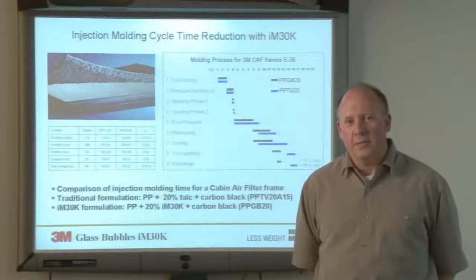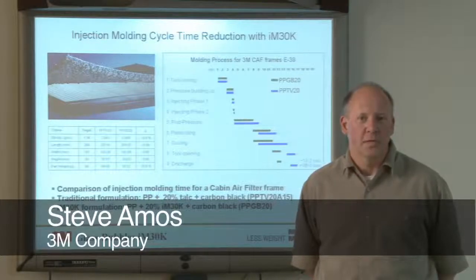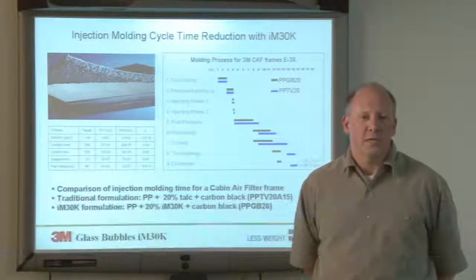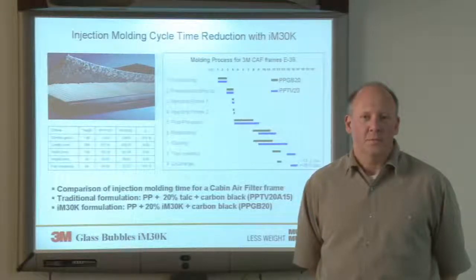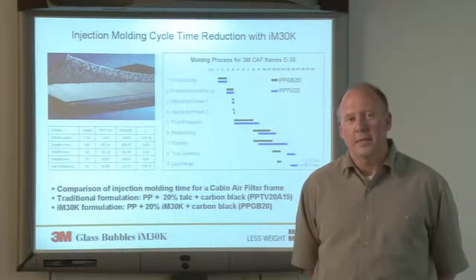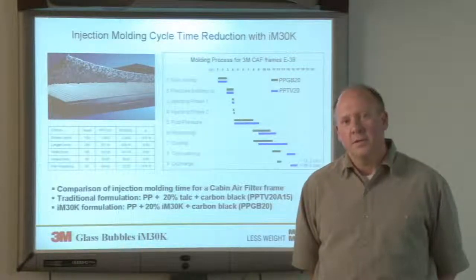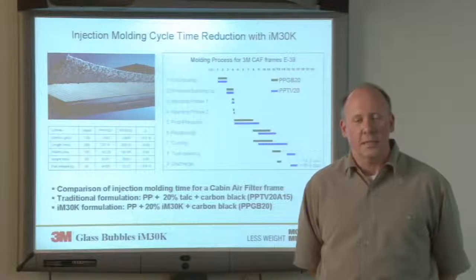Another benefit of adding glass bubbles to a composite in injection molding or extrusion is that we can improve cycle time and reduce the time for the material to cool down. Because we're taking mass out of the composite — mass you don't have to heat up, you don't have to cool down — you can greatly improve cycle time.